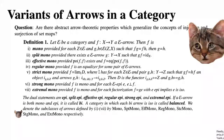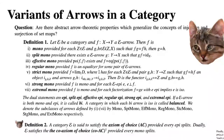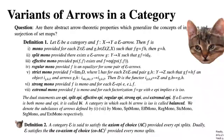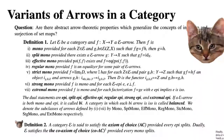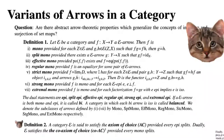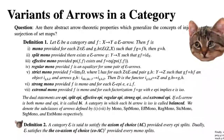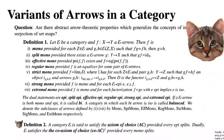We say a category E satisfies the axiom of choice provided every epi splits, so Epi = SplitEpi in the category. Dually, E satisfies the co-axiom of choice provided every mono splits. This is a generalization of the classical axiom of choice in Set: a model of Set satisfies the axiom of choice in this categorical sense if and only if it satisfies the classical axiom of choice — they are equivalent notions.